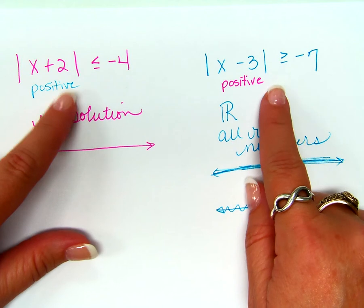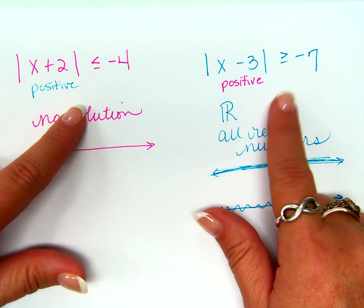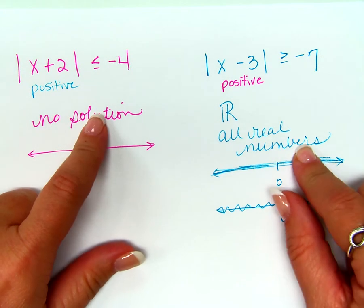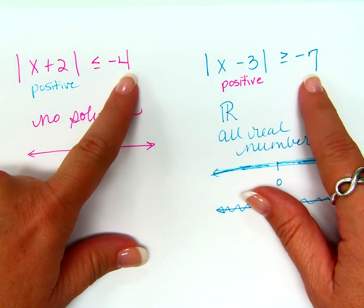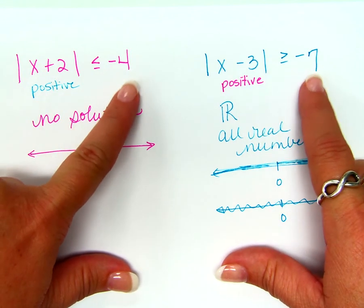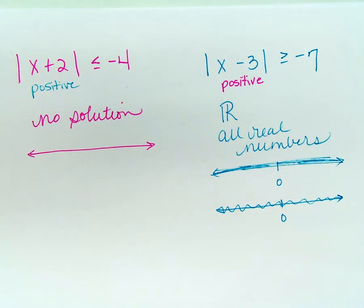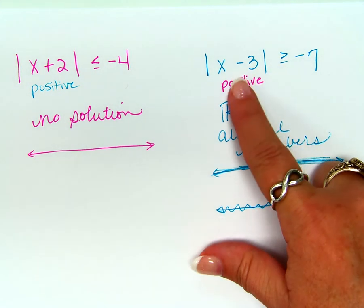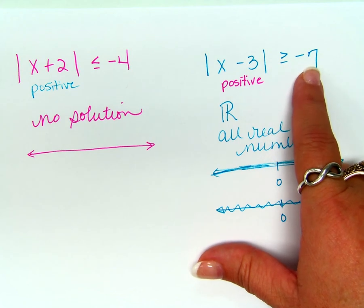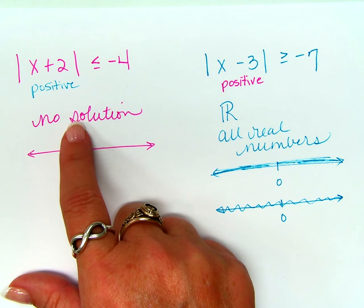Guys, those are kind of the two special situations that we have in absolute value inequalities. What's true about both of these situations? Negative numbers over here. Once the absolute value is isolated, this number over here is negative. If a negative number shows up over here, you're probably going to have a special situation. Is that really true for equations as well? It is, isn't it? If this was an equal sign, what positive number would ever equal a negative seven? None. So, that would be like no solution, wouldn't it?